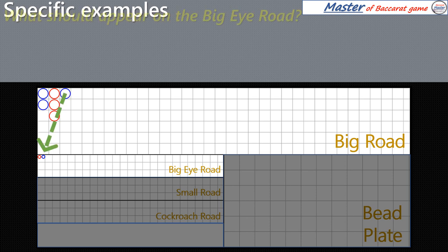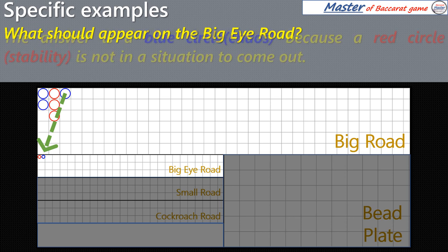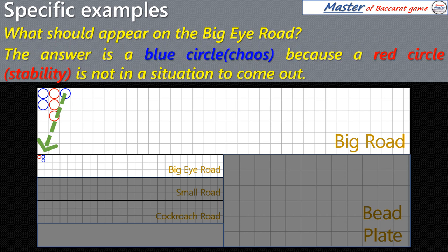What should appear on the Big Eye Road? The answer is a blue circle, because a red circle is not in a situation to come out.